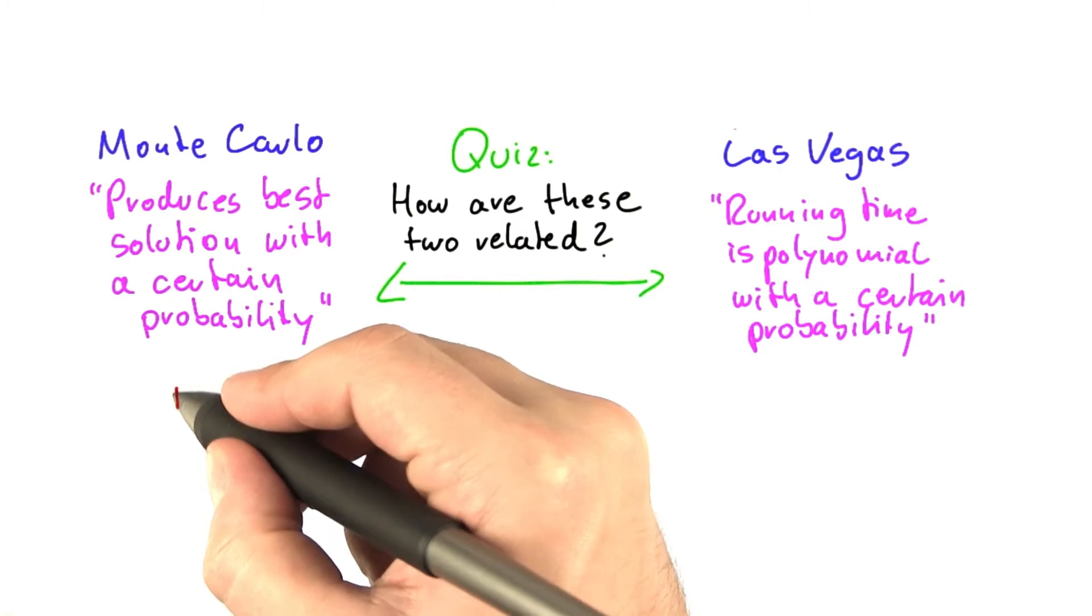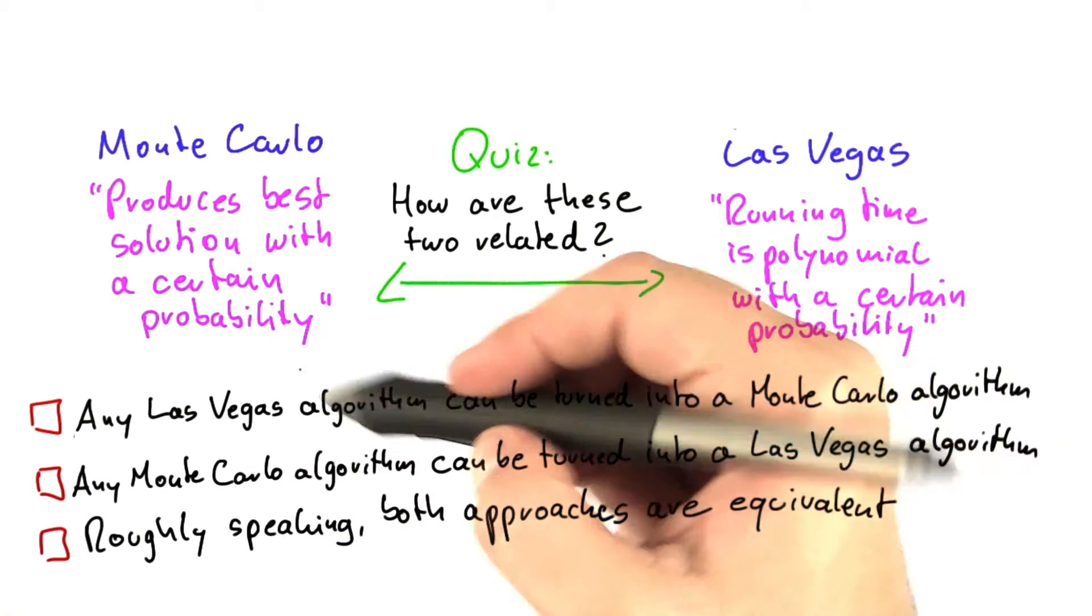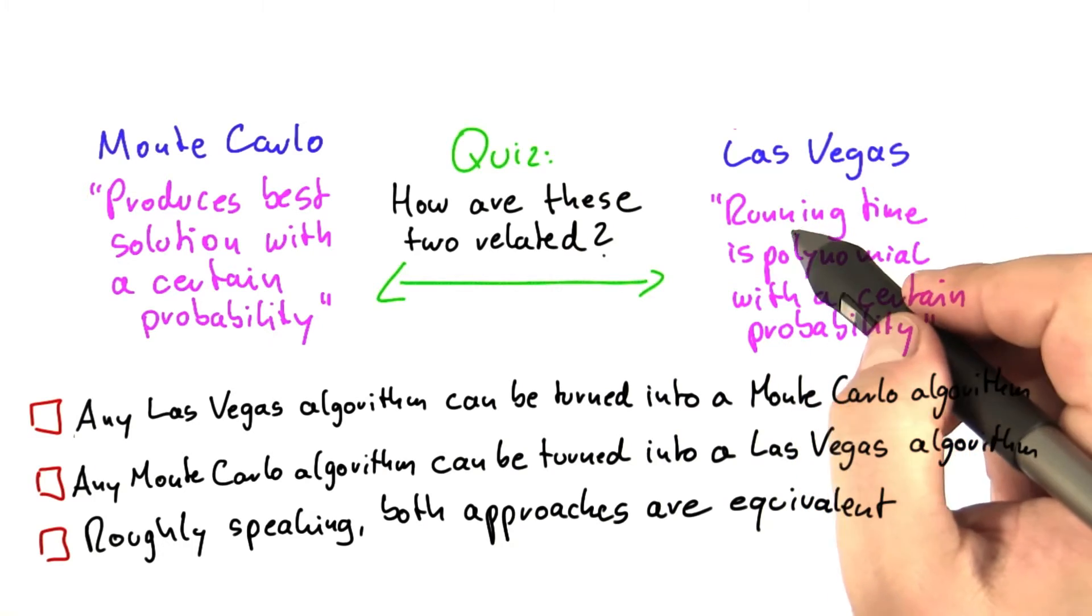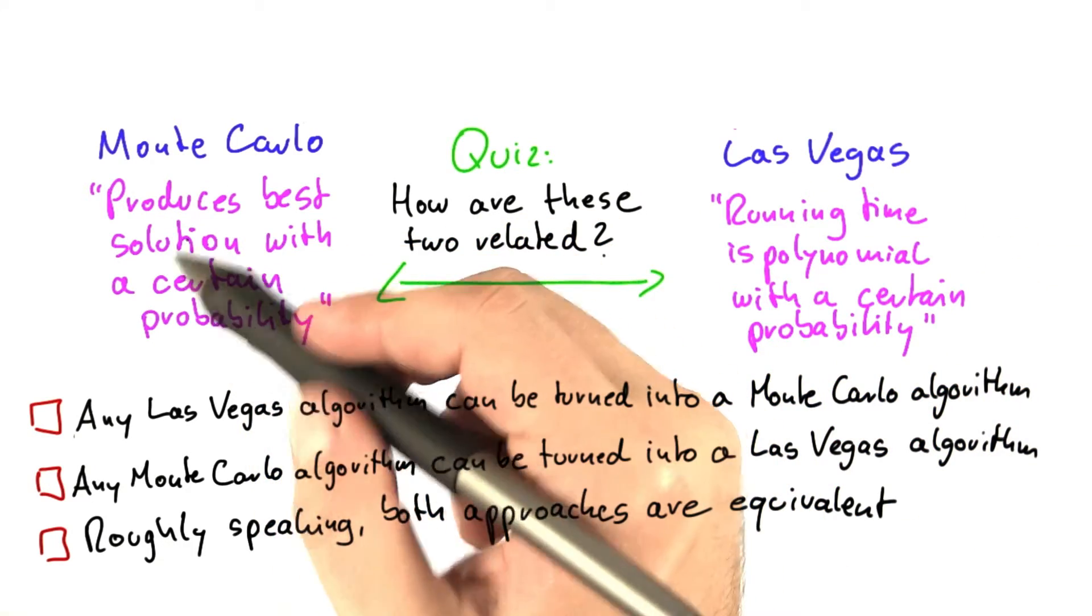And I'll give you three choices here. Is it that any Las Vegas algorithm can be turned into a Monte Carlo algorithm? So any algorithm over here can be turned into an algorithm like this.